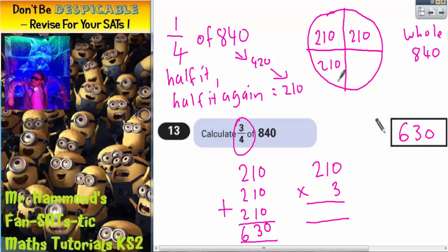What would have happened if we'd have got three lots of 210? Well, three lots of 0 is 0. Three lots of 1 is 3. And three lots of 2 is 6. So, again, we've got 630.